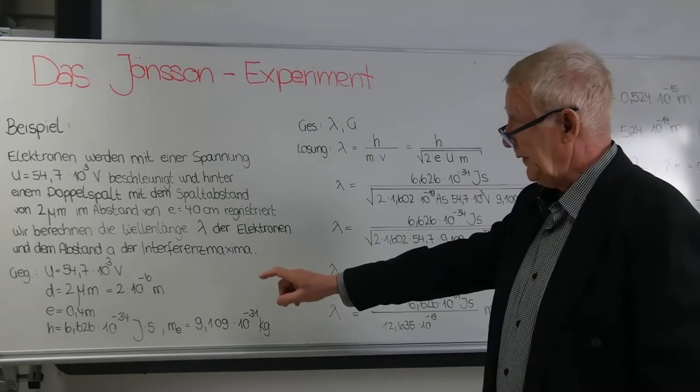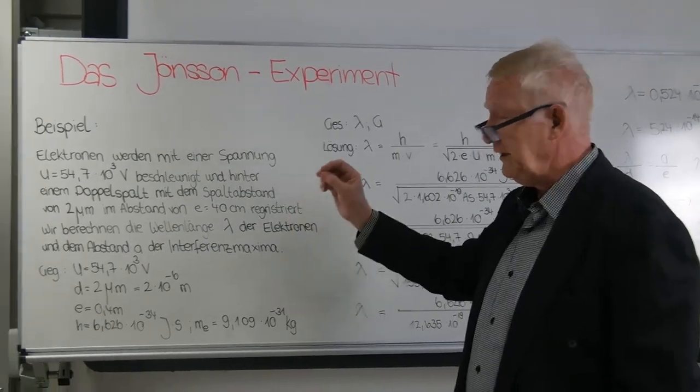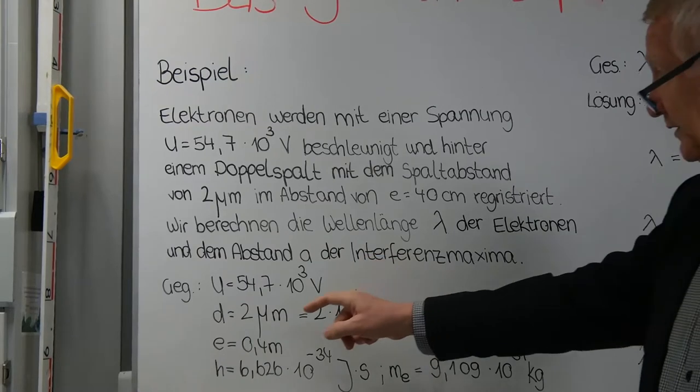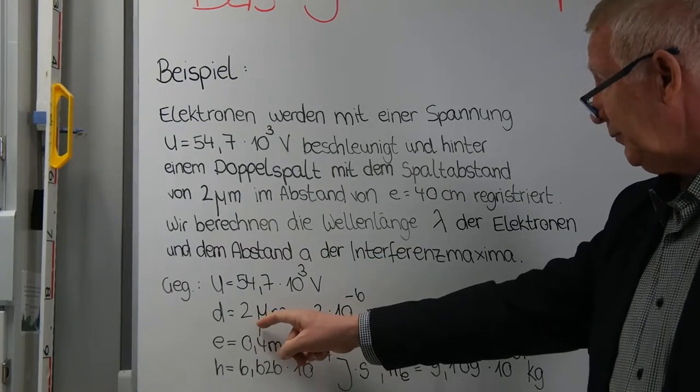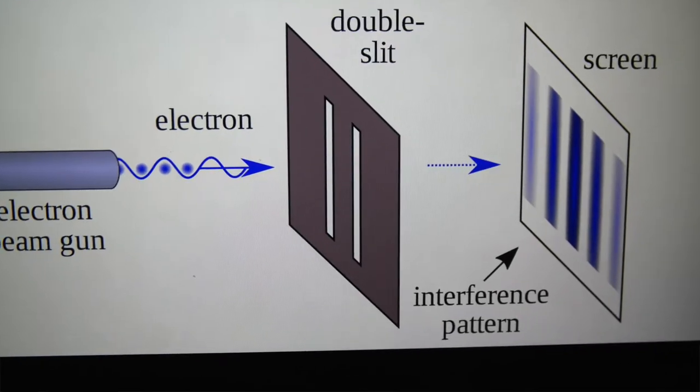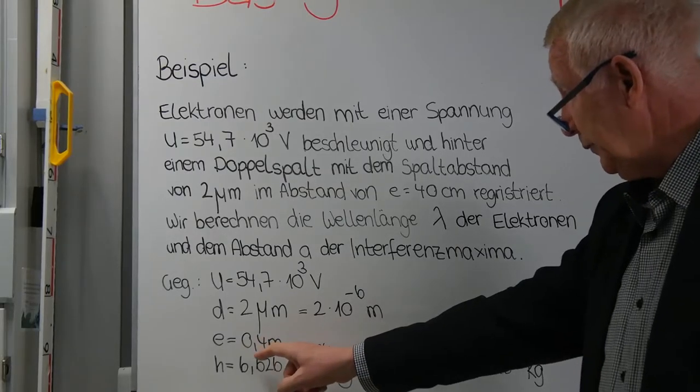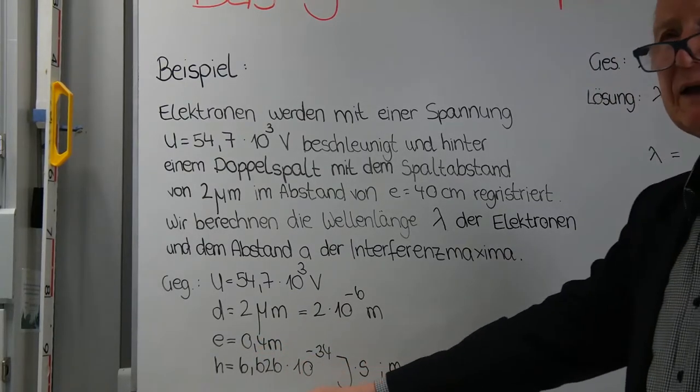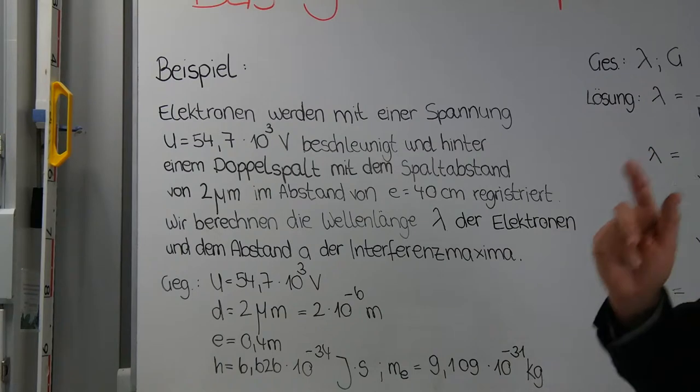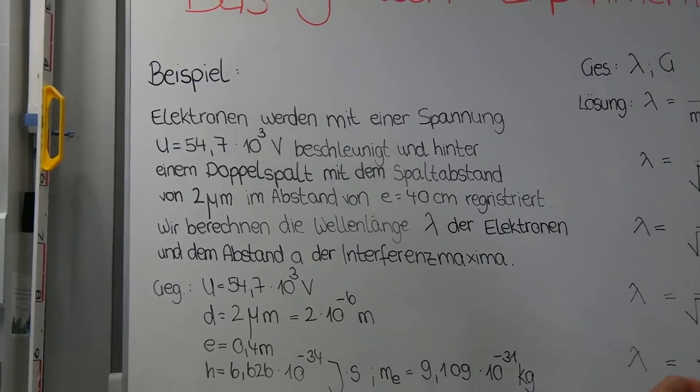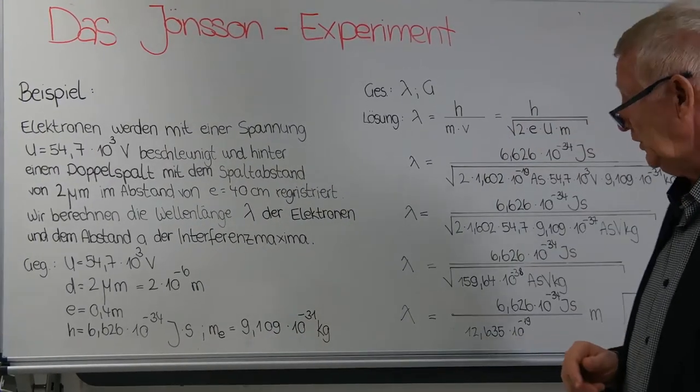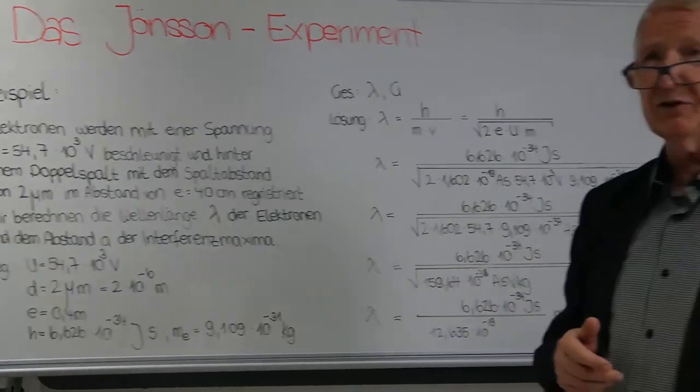The camera shows the example. We start from the given values: voltage 54.7 × 10³ volts, slit spacing 2 micrometers or 2 × 10⁻⁶ meters, E = 0.4 meters. Planck's constant is always known as 6.626 × 10⁻³⁴ joule seconds, and we also have the mass of an electron as 9.109 × 10⁻³¹ kilograms.